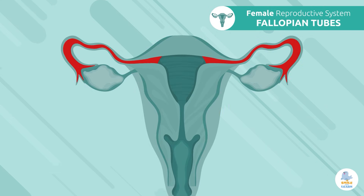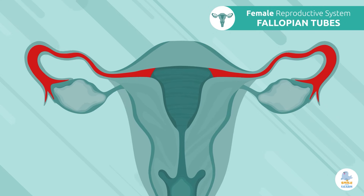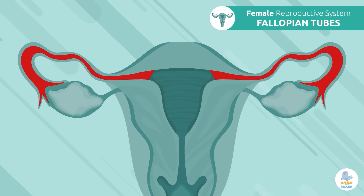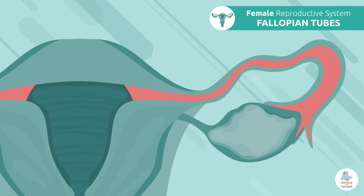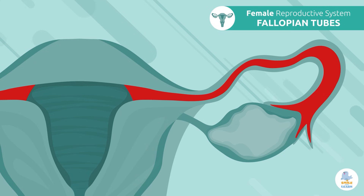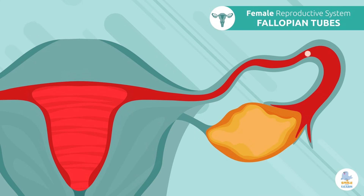Fallopian tubes: the fallopian tubes are tubes responsible for connecting the ovaries with the uterus, allowing them to transport eggs.